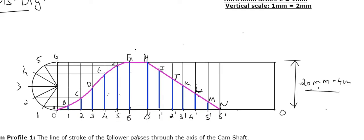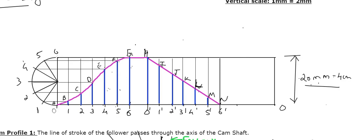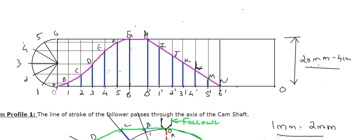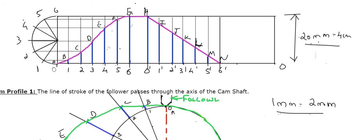So the data again: we have drawn the displacement diagram. The outstroke is 120°, dwell is 30°, return stroke is 120° again, and maximum lift is 20 mm. I have taken 20 mm as 4 cm, meaning a scale of 2 is to 1 for drawing the lift.